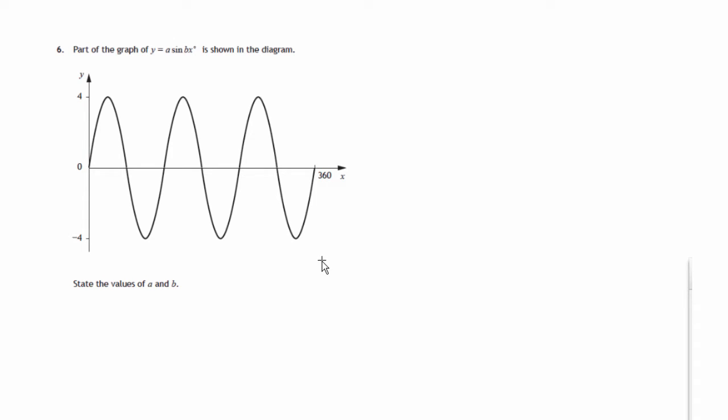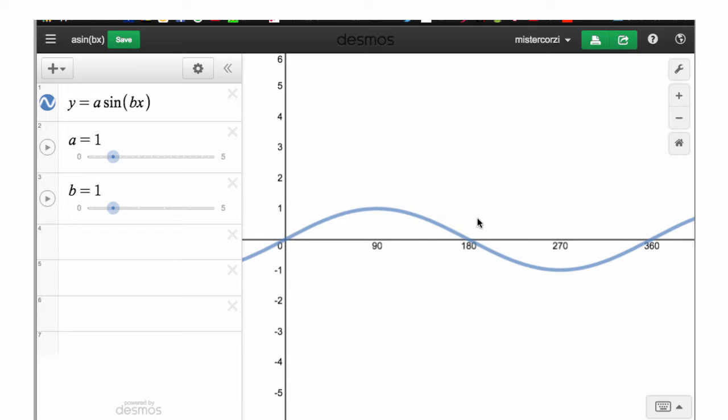Now I think to do this we should get into an animation just to see what happens when we change the values of a and b. So here we have an animation and it shows the graph of a sine bx where a is 1 and b is 1. So we've got one lot of sine 1x. That's just the normal y equals sine x graph.